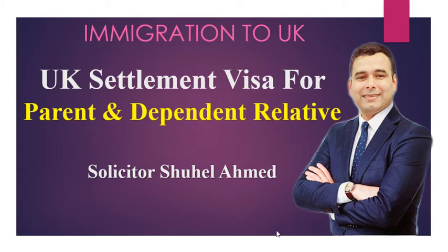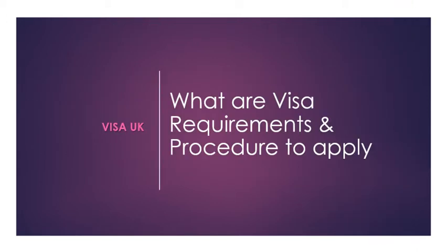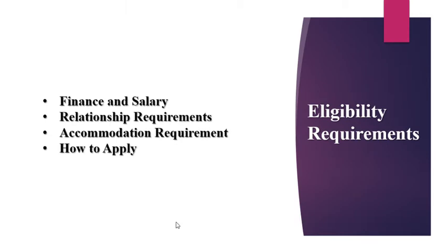I'll speak today about how you can bring your dependent parents or any relatives to the UK permanently. In this video I'll show you how you can apply and I'll discuss the detailed requirements of the adult dependent settlement visa. The adult dependent settlement covers your parents, siblings, relatives, or children — essentially any relatives as long as you can prove the relationship requirement and other requirements.